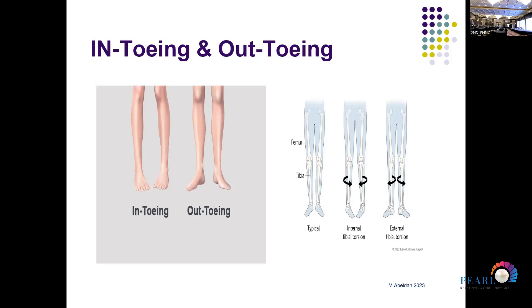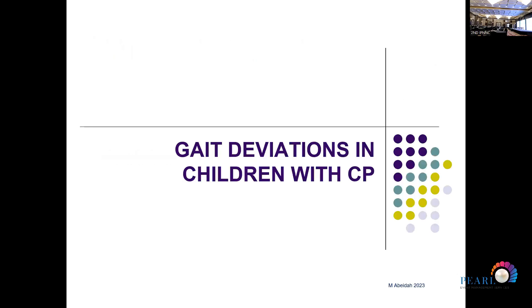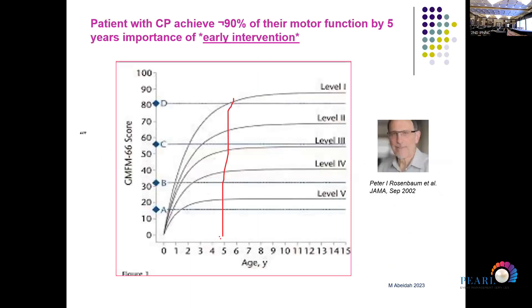Another common example we see in our clinic is tip-toe walking. It is very common under the age of two and can also be seen beyond two years with a normal neurological examination — we call it idiopathic tip-toe walking. It normally resolves, but sometimes needs intervention such as orthotics, and if it persists it can cause shortening of the Achilles tendon.